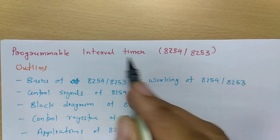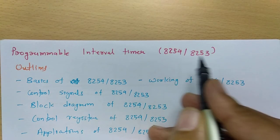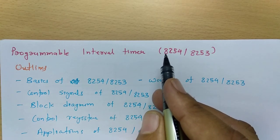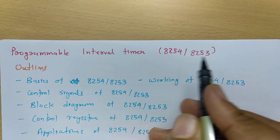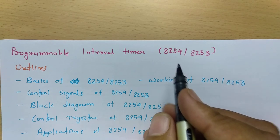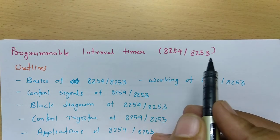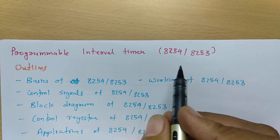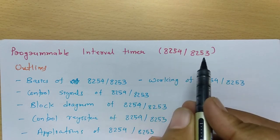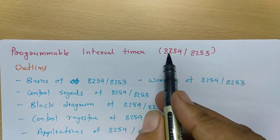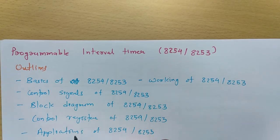There are two versions of it: 8254 and 8253. 8254 is a slightly advanced version of 8253, but the working of both ICs is almost identical.